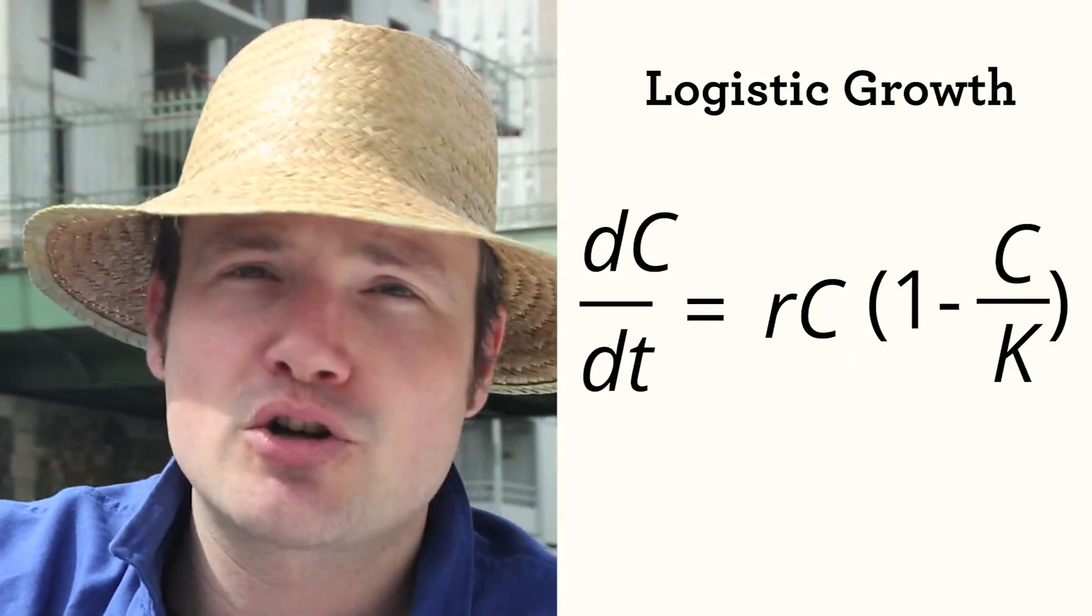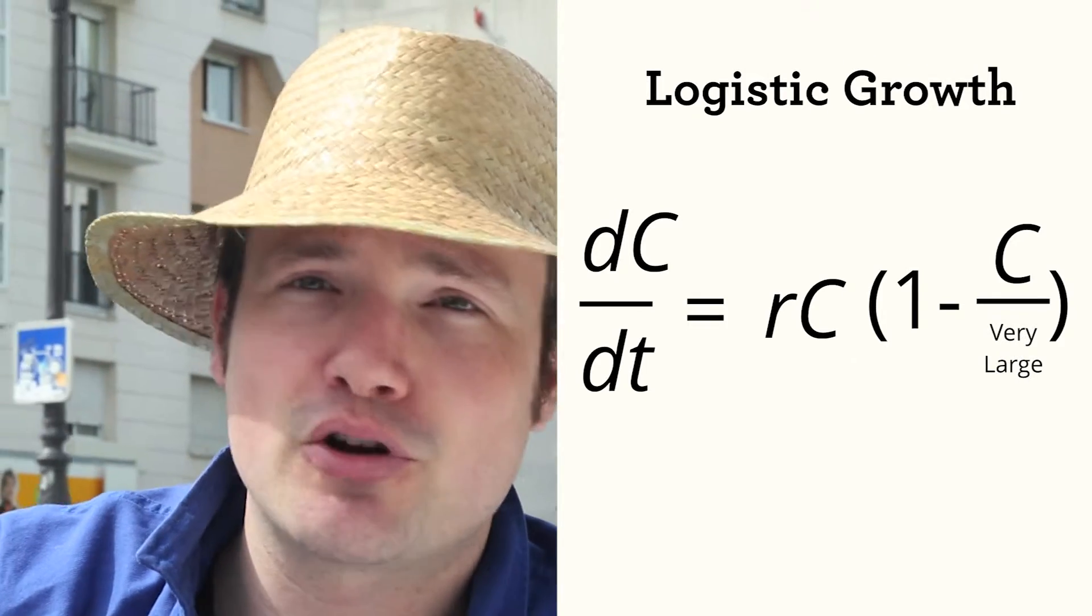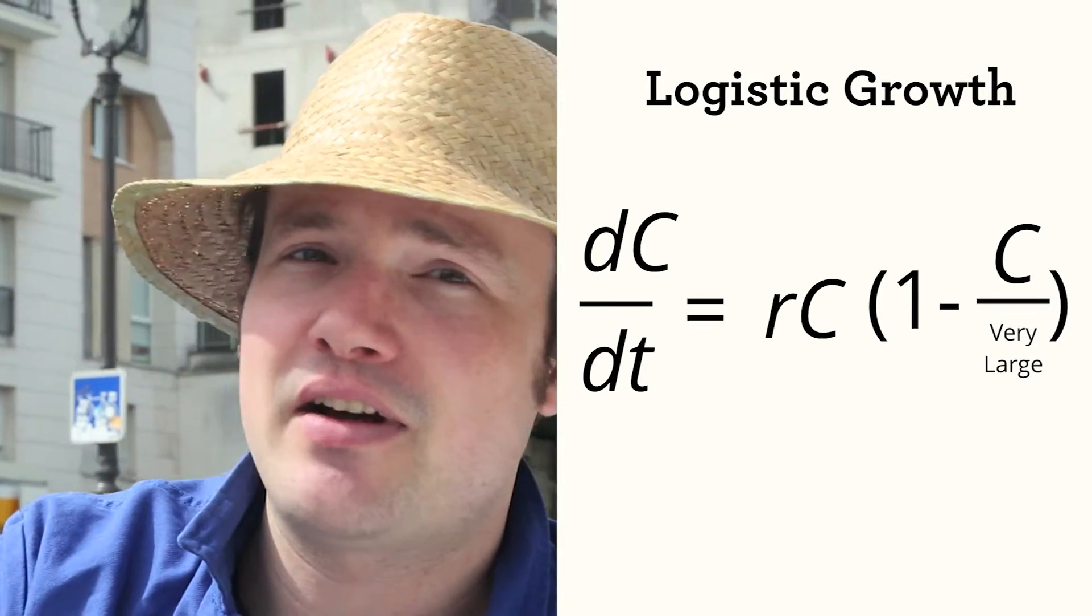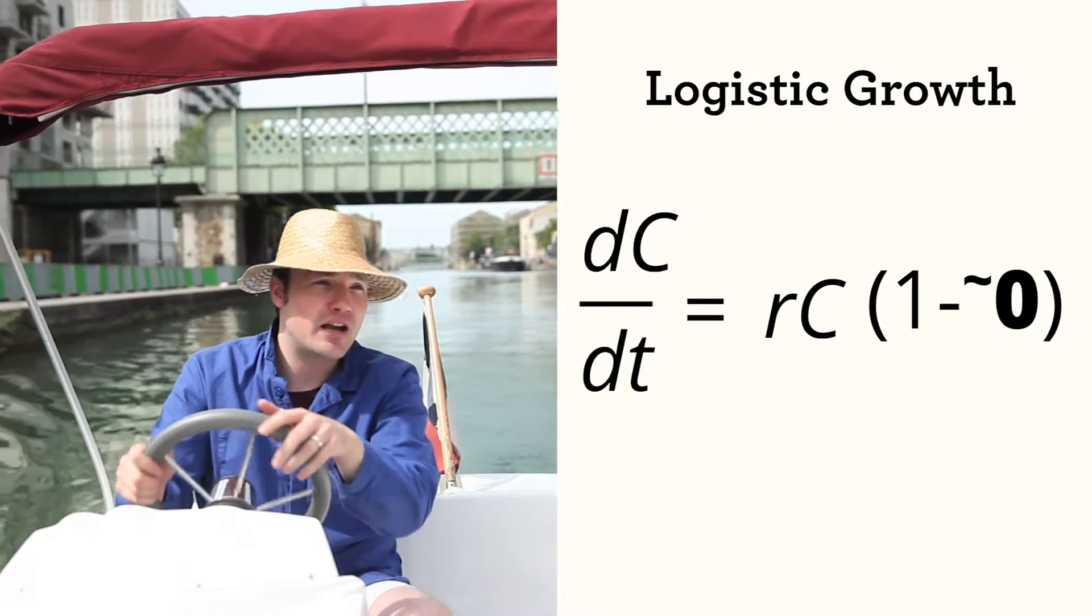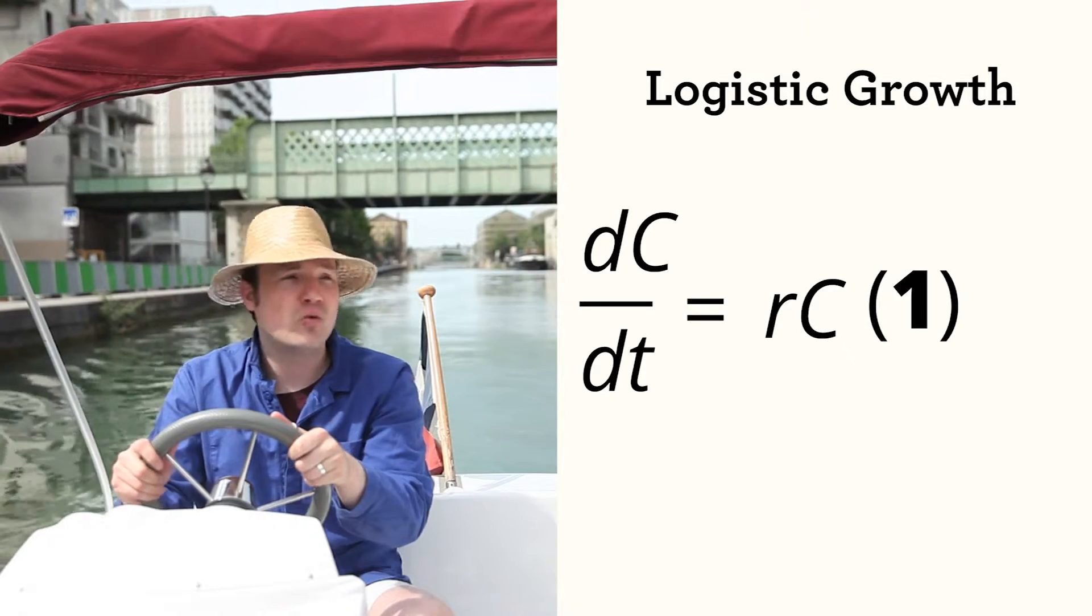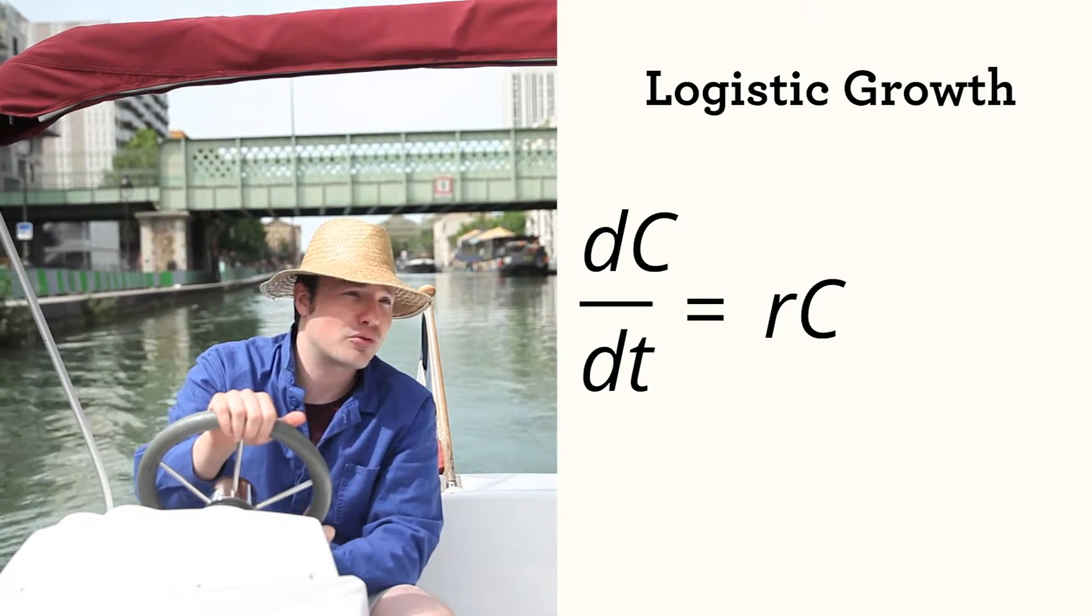Now, what about large values of K? Well, if K is much, much larger than C, then C divided by K will be almost 0. That means that 1 minus C over K will be almost 1. Well, 1 times anything is itself, so the logistic term essentially doesn't affect the growth rate.